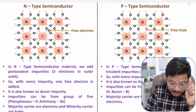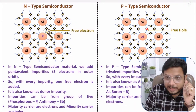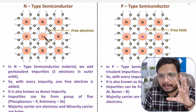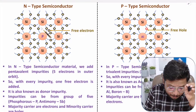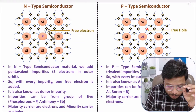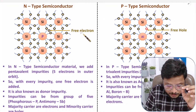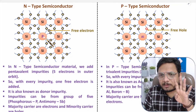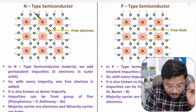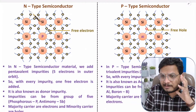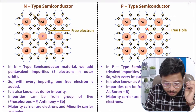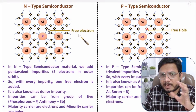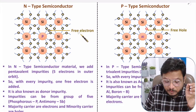In N-type semiconductor we add pentavalent impurities. Pentavalent impurities means there are five electrons in the outer orbit. So when you add pentavalent impurities in a covalent bond structure, you will have free electrons. In semiconductor material we have four electrons in the outer orbit, and the extra impurity we add in N-type generates free electrons. So the majority charge carrier in N-type is the free electron.